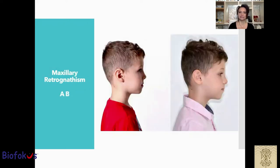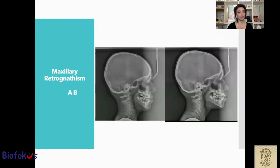Then, maxillary retrognathia with an open mouth posture, breathing problem, and postural problem. We can correct them, of course, by guiding the facial growth and especially the upper maxilla forward. Of course, the kid is still in treatment — it's not a finished treatment yet, because class 3 cases are the most challenging.